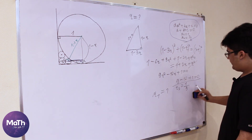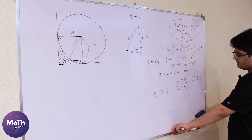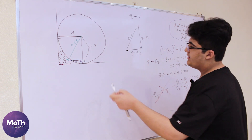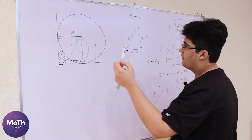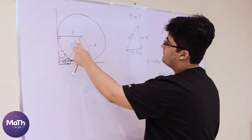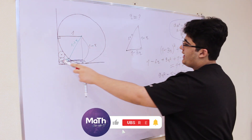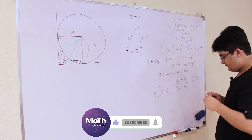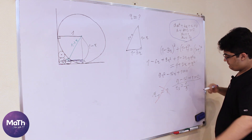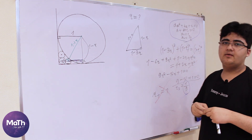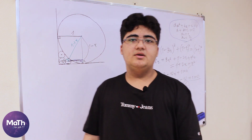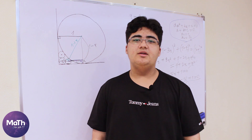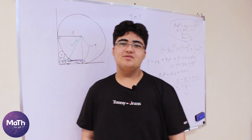So r equals 1 over 9. The solution r equals 1 is irrelevant because r is the radius of a smaller circle and we know the radius of the bigger circle is 1, so r cannot equal 1. Therefore the answer is 1 over 9. I hope you guys enjoyed the video — don't forget to hit the like button and subscribe to my channel, and see you in the next video!